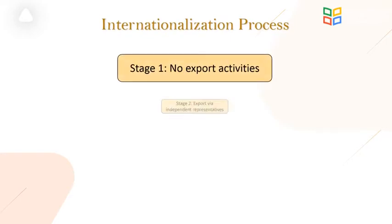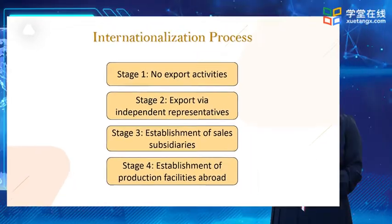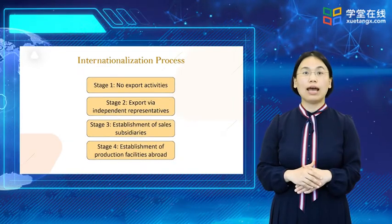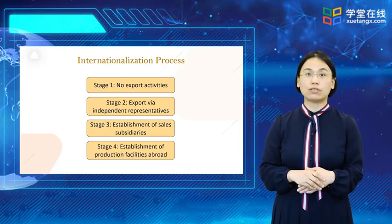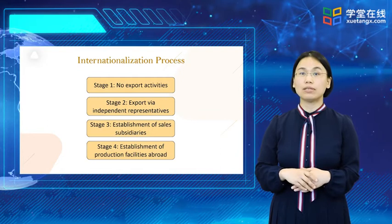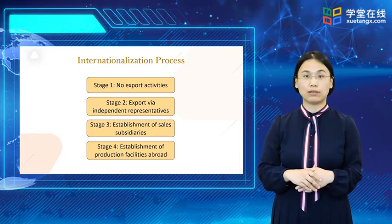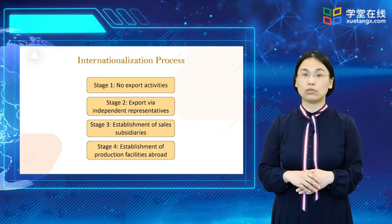If any company wants to internationalize, the first task is to move from stage 1 to stage 2. Most firms work with an independent agent and enter a nearby or similar country. Later, the firm establishes an export department to manage its agent relationships. Still later, it replaces agents with its own sales subsidiaries in its larger export markets. This increases investment and risk but also earning potential.